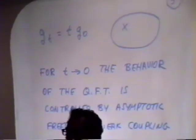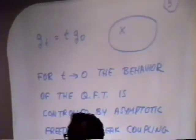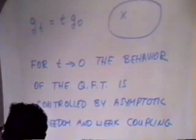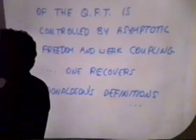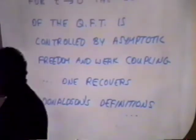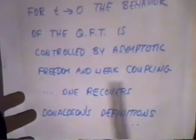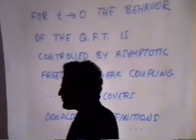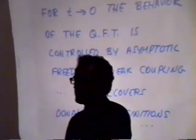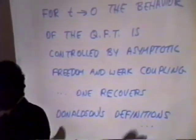One fundamental statement, which comes from asymptotic freedom — and is one of the foundation stones for our understanding of the theory of nuclear forces — is that for t going to 0, the behavior is controlled by weak coupling, and in particular, for t going to 0, you can calculate explicitly and recover Donaldson's definitions. The statement that this is what happens for t going to 0 is really the basis of the assertion that this theory is equivalent to Donaldson theory.